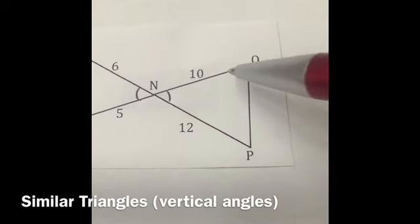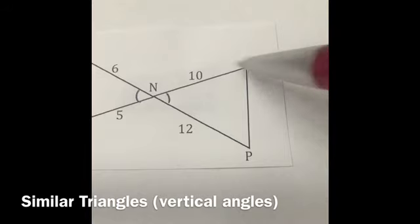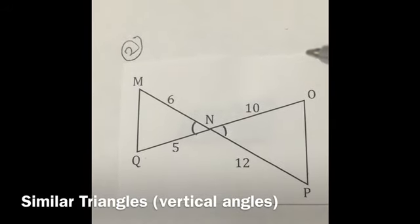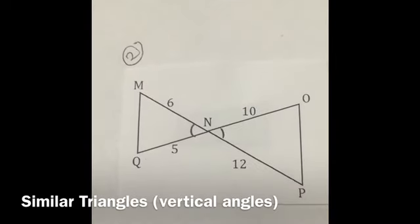So for instance, I have this triangle which is MNQ and this triangle which is ONP, and I'm looking at which angles are going to be corresponding.